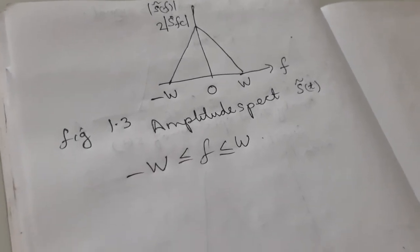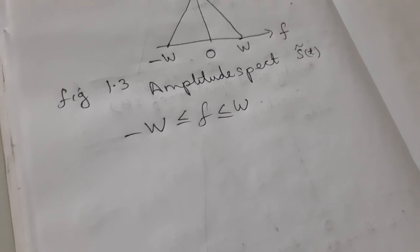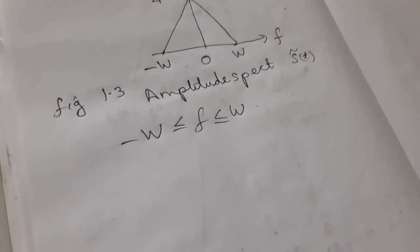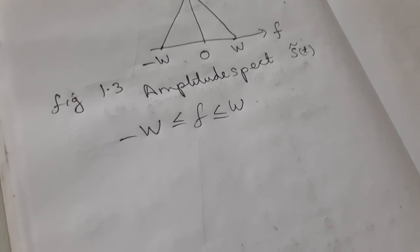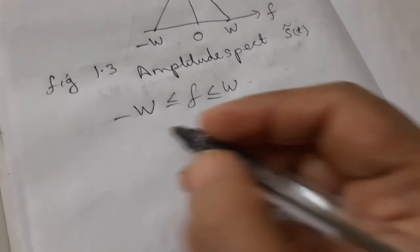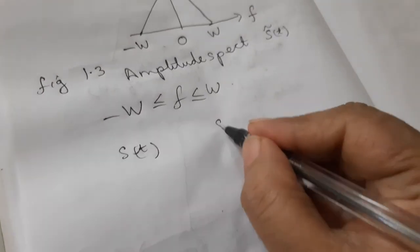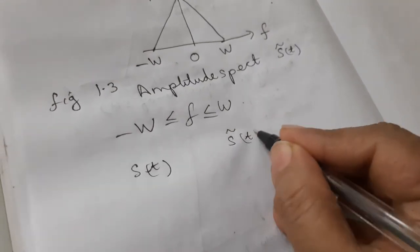Thus, the complex envelope S tilde of t of the band pass signal S of t is a complex low pass signal. Also, the information content of S of t is fully preserved in the complex envelope S tilde of t.